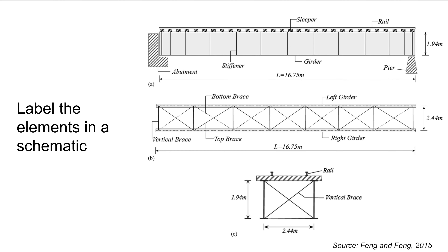Next, good schematics use labels to accurately represent elements of an object or structure. Use labels to note components and sections of objects. You can include measurements of components to give a sense of scale for readers. Other types of labels include a scale and legend. Ensure that labels are clear to read by having contrast with the schematic color and that they do not crowd the visual.